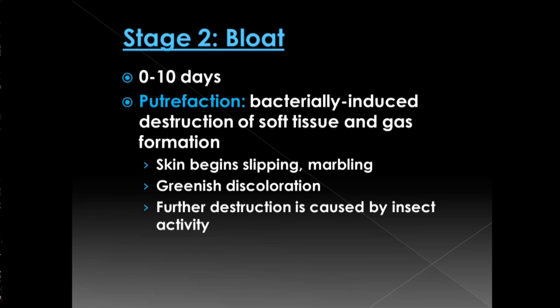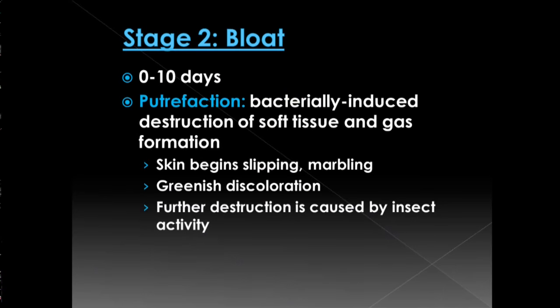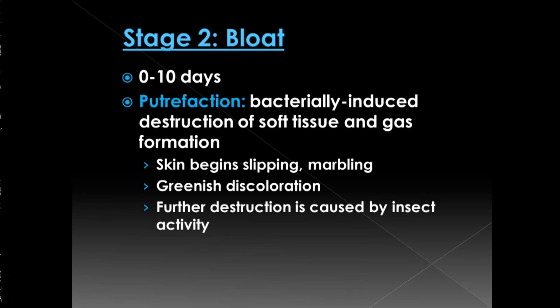During this stage we see putrefaction. That is the stage when all the bacteria in the body gets really active. After death, the bacteria starts to destroy the soft tissue and starts to form gas as it's moving around inside your body. The body starts to get larger, and on the exterior we see that the skin starts to slip. We see this marble-like appearance of the skin — a slight discoloration, with green or even shades of gray appearing on the body.